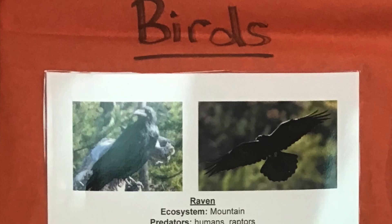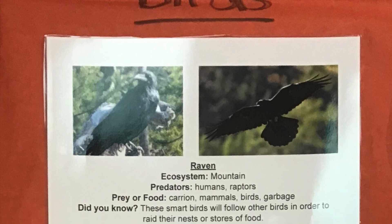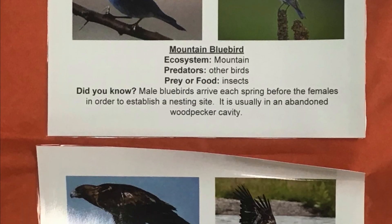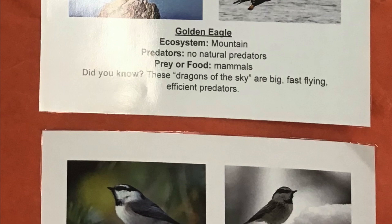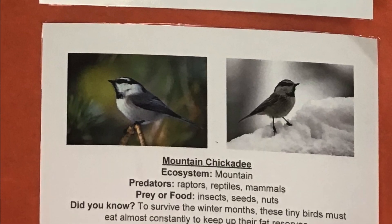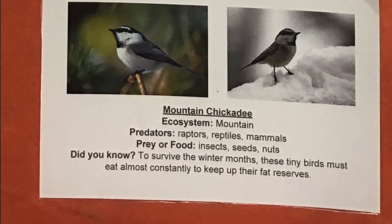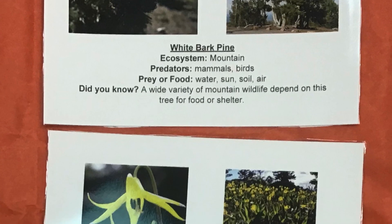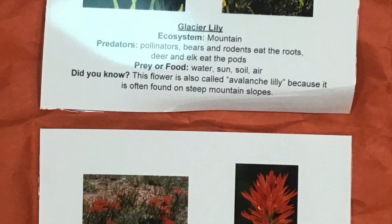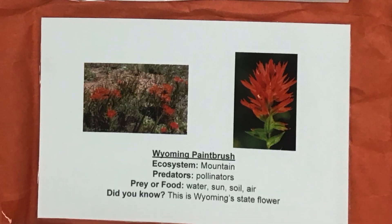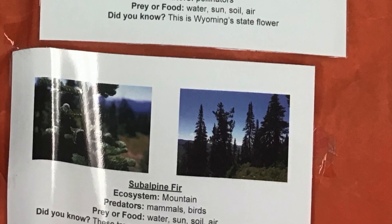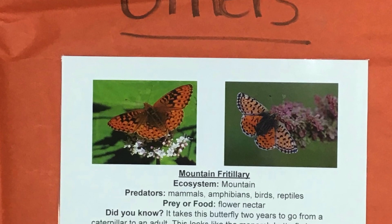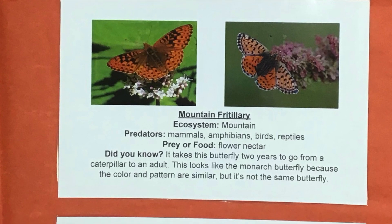Birds like ravens, mountain bluebirds, golden eagles, and mountain chickadees can also be found in this ecosystem. Plants in the mountain ecosystem include white bark pine, glacier lily, Wyoming paintbrush, and subalpine fir. Mountain fritillary and boreal toads are other animals that can be found here.